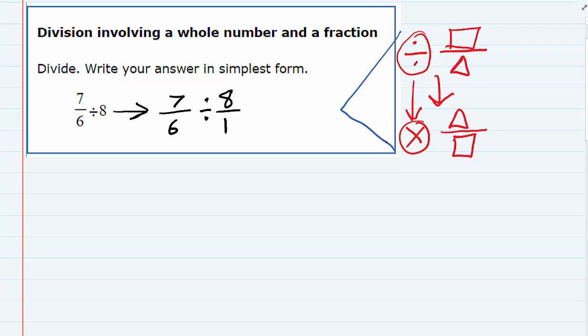I can change the division into multiplication, and all I need to do is take the reciprocal of that second fraction, the one on the right hand side of that sign. So it's just this one, the 8 over 1, that gets flipped to be 1 over 8.